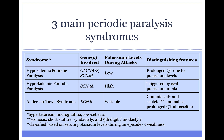Hypokalemic periodic paralysis is the most common type of periodic paralysis. It is due to variants in either a calcium channel or a sodium channel.